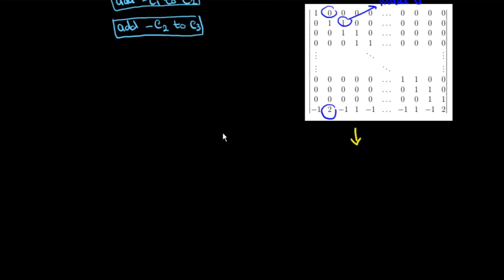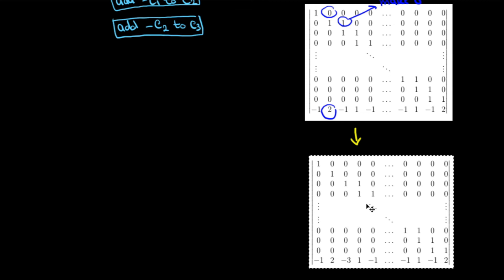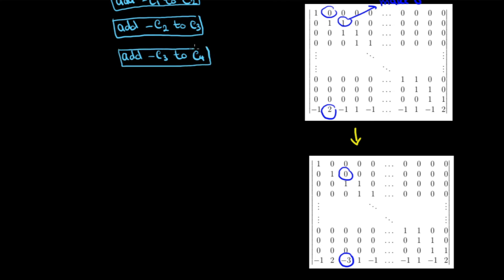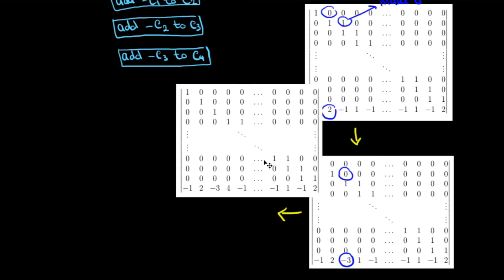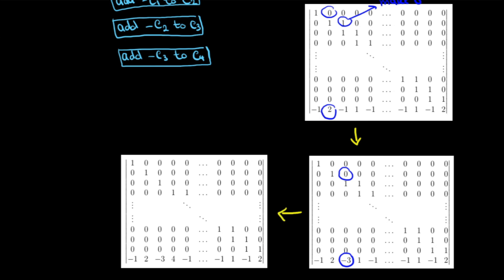Now we make the next one zero. We apply the similar operation: subtract c2 from c3, to make the one at the third column zero. We get a new matrix where the first two values of the third column are zero, and the bottom is minus 3, because 2 times minus 1 plus minus 1 equals minus 3. We do the similar operation again: subtract c3 from c4, and we get a new matrix where the fourth column has the first three values zero and the last one is 4.